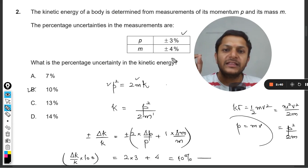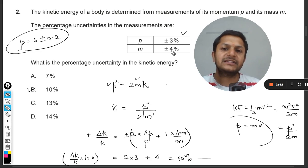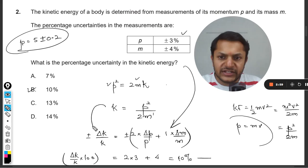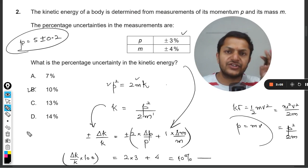The only thing, the only problem here is that the values for the error are already given in percentage. They are not given in absolute terms, like the momentum is not given as 5 plus minus 0.2. Instead the percentage is given, so we are directly going to substitute the values. From this step to this step, I think you should be doing this thing.